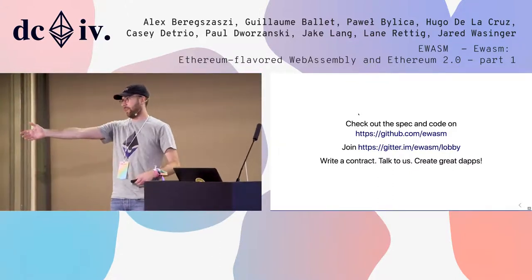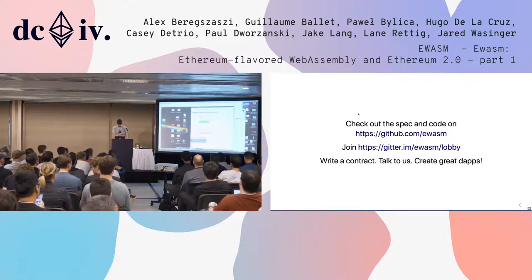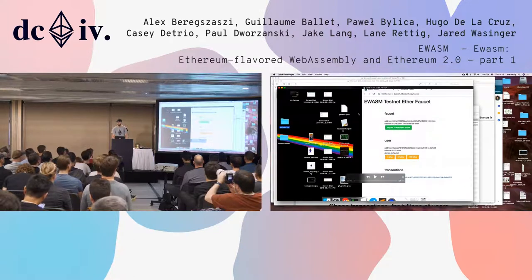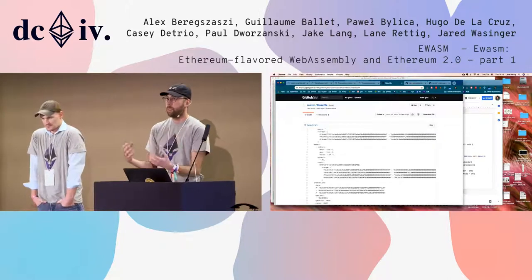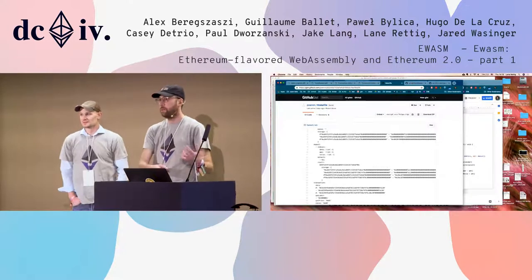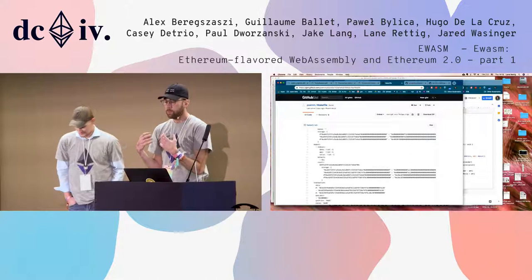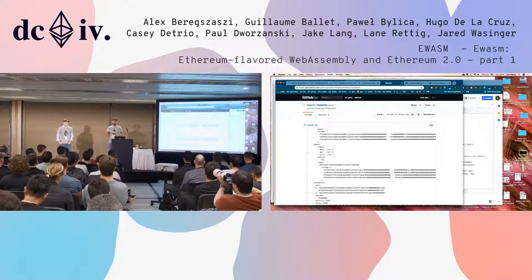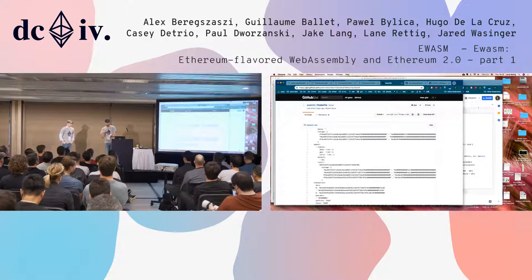That was Alex Bregzasi, our team lead. Up next, we're going to do demos of some of the language tooling we've built. One of the nice things with the eWASM toolchain is the ability to develop smart contracts in a whole host of programming languages including Rust, C/C++, and AssemblyScript. As a framework for this, Alex created the WRC20 challenge — the W refers to WASM. It was a challenge to build a simple ERC20-style token contract using various languages. We've had implementations in eight or nine languages so far at github.com/ewasm. Paul is going to demo C/C++.